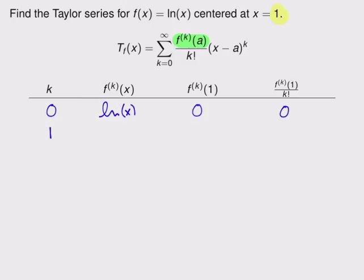My next step, k equals 1. What's the first derivative of natural log of x? It's 1 over x. For compactness and for reasons you'll see shortly, I'm going to write it as x to the minus 1. It's going to make it easier to take derivatives if I write it this way. When I evaluate that at x equals 1, I just get 1. And 1 over 1 factorial is still 1. So far, pretty simple. I don't really see any patterns developing, but let's check the next one.